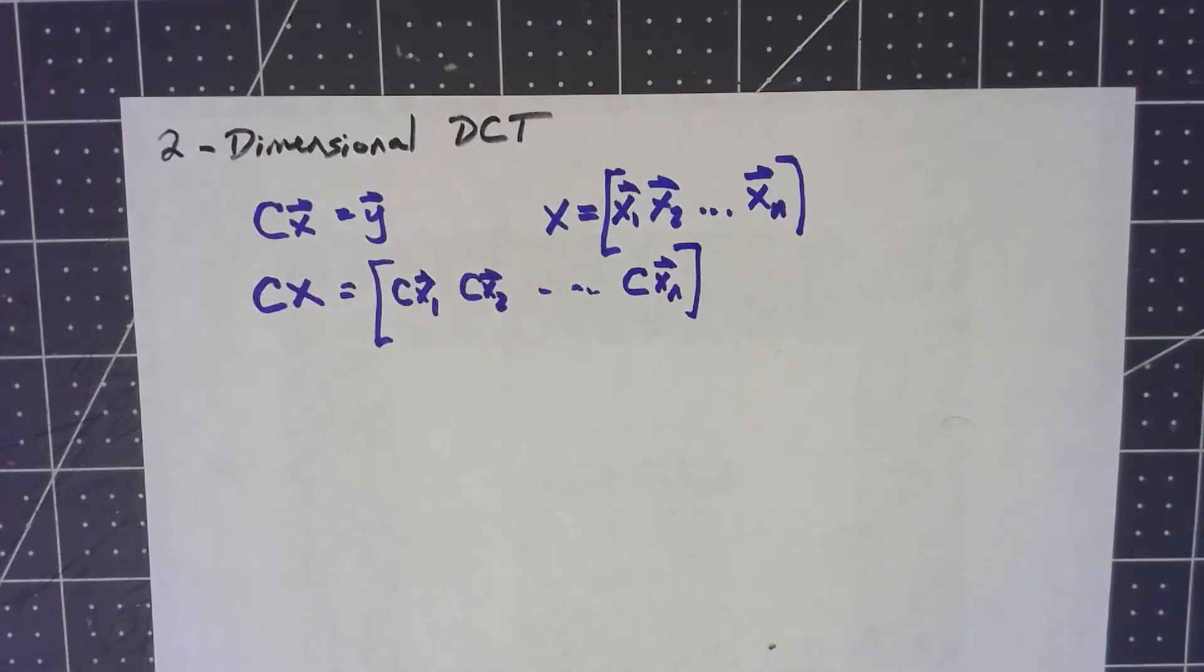But that's only really applying the DCT in one dimension. We're applying the DCT to the columns, but we haven't compressed the rows at all.